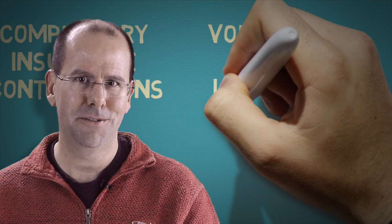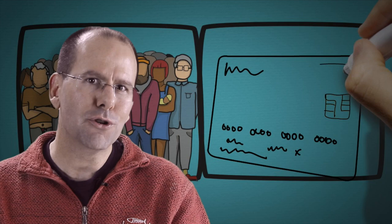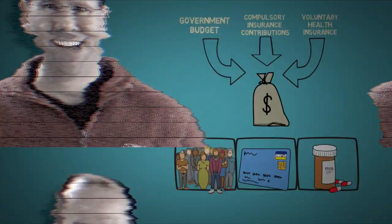And then these funds get used to address the three dimensions of universal health coverage. These three dimensions are number one, the proportion of people covered, number two, the proportion of costs covered, and number three, the range of services that are available.